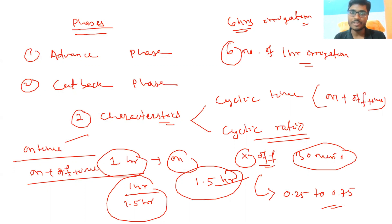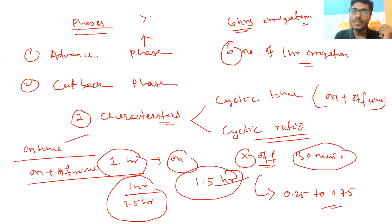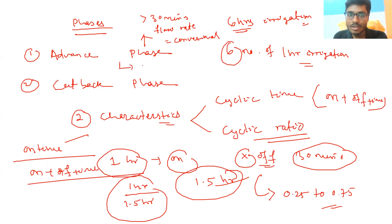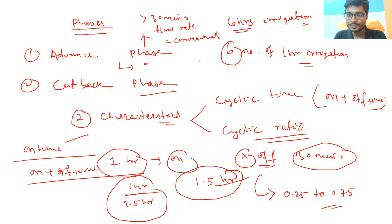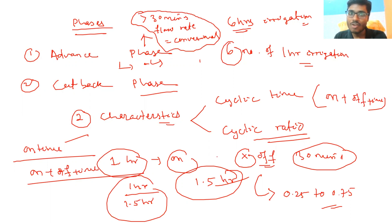Now coming to the two phases of surge irrigation — the advanced phase and the cutback phase. During the advanced phase, the cyclic time is usually more than 30 minutes and the flow rate is the same as in conventional surface irrigation. The advanced phase is the time period required for the waterfront to reach the end of the field. When it reaches the end point, the advanced phase stops and the cutback phase begins.